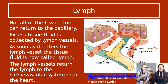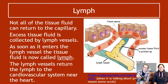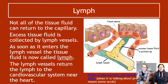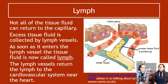So basically it's the same thing with three names: plasma, then tissue fluid, then lymph once it's in the lymph vessel. The lymph vessel travels all around your body and returns the lymph to near the heart, where it gets repressurised back into the cardiovascular system.